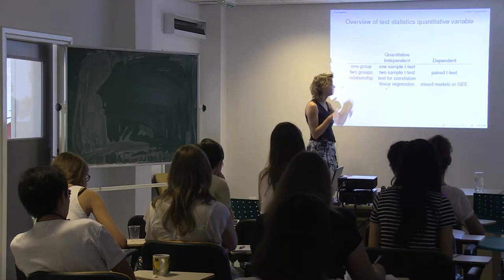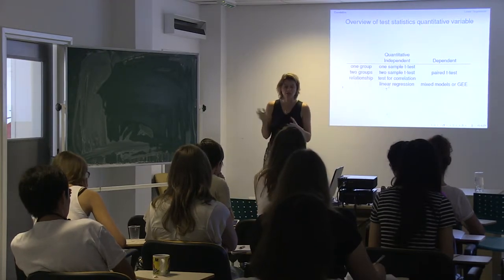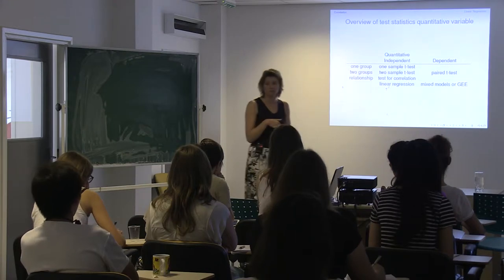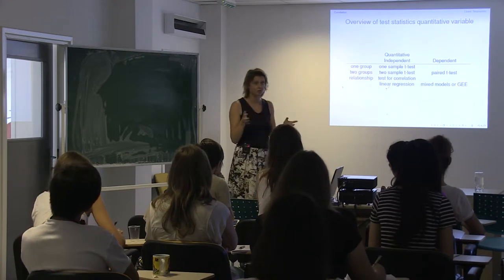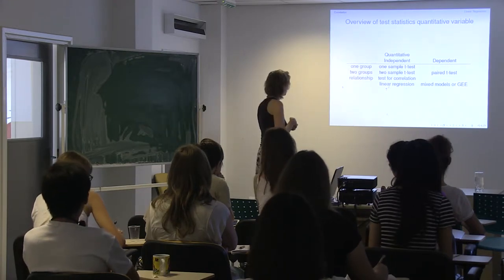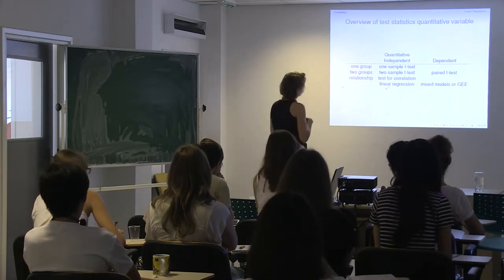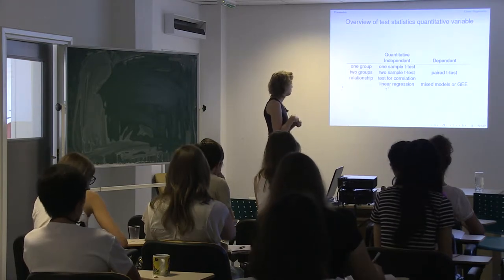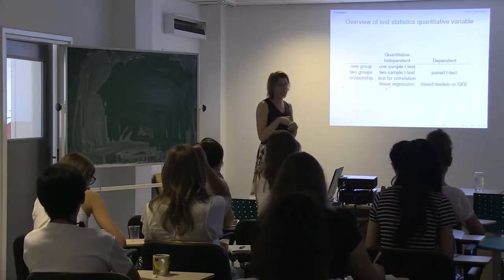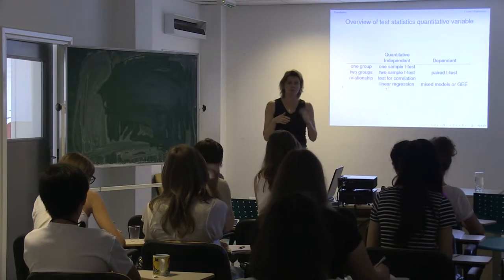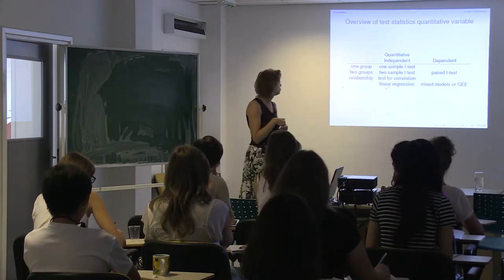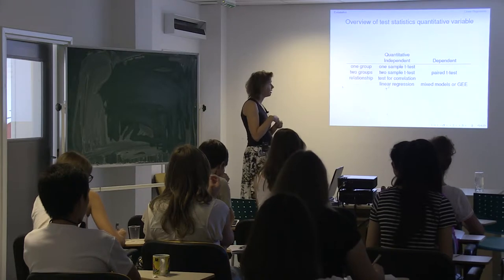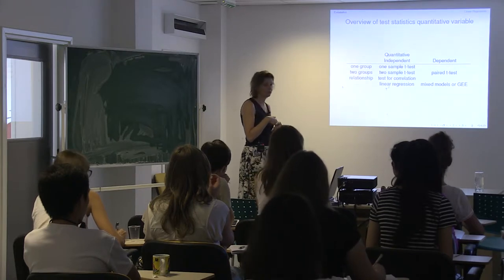If we have two groups like cases and controls, females and males, treated and untreated, exposed and unexposed, then we use the two-sample t-test. And when we are interested in relationships — for example, glycans and age — then we use tests for correlations and also linear regression.